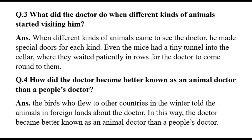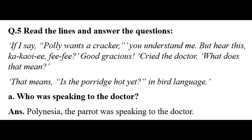Question four: How did the doctor become better known as an animal doctor than a people's doctor? The answer is the birds who flew to other countries in the winter told the animals in foreign lands about the doctor. In this way, the doctor became better known as an animal doctor than a people's doctor.